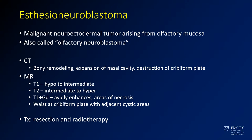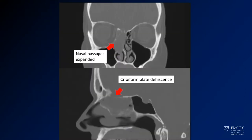The treatment for this mass is resection and radiotherapy. On the CT images, there's expansion of the right side of the nasal passages and loss of definition of the turbinates on that side. You'll also see thinning of the cribriform plate — the normal bony definition of the anterior cribriform plate is lost, where there should be more bone in that region.